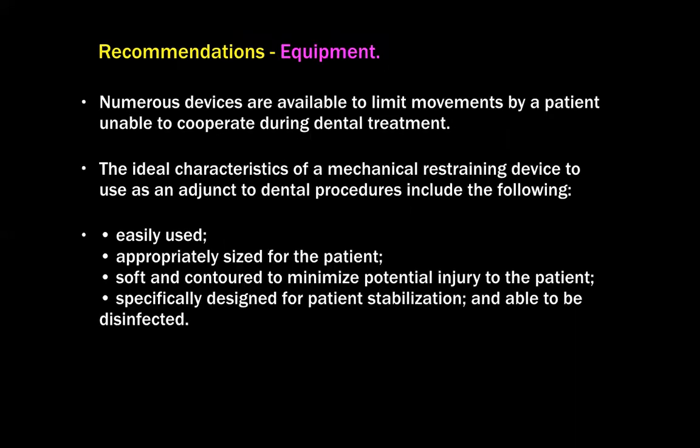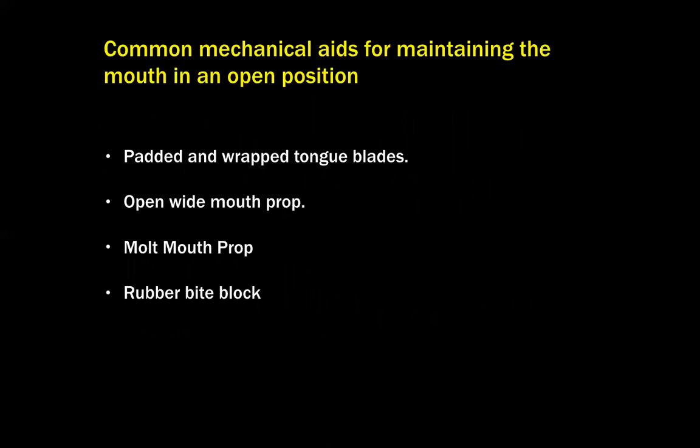Numerous devices are available to limit the movements of a patient unable to cooperate during dental treatment. The ideal characteristics of a mechanical restraining device include: it can be easily used; it should be appropriately sized for the patient with various sizes available; it should be soft and contoured to minimize potential injury; it should be designed for patient stabilization; and it should be able to be disinfected. Common mechanical aids for maintaining the mouth in an open position include padded and wrapped tongue blades, Open Wide mouth prop, Molds mouth prop, and rubber bite block.